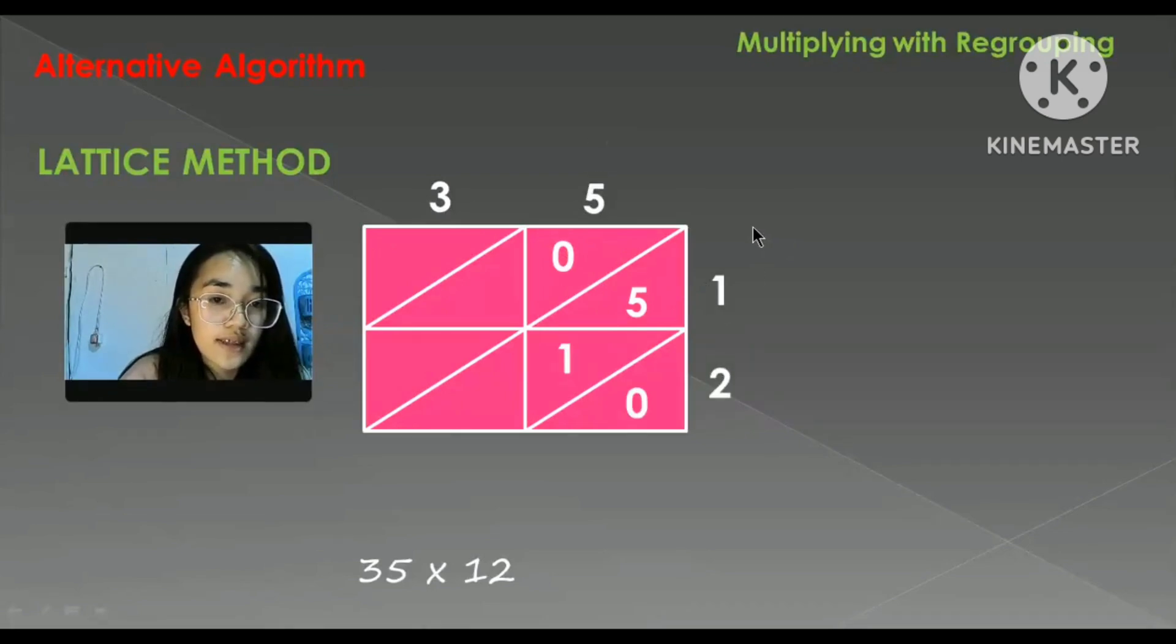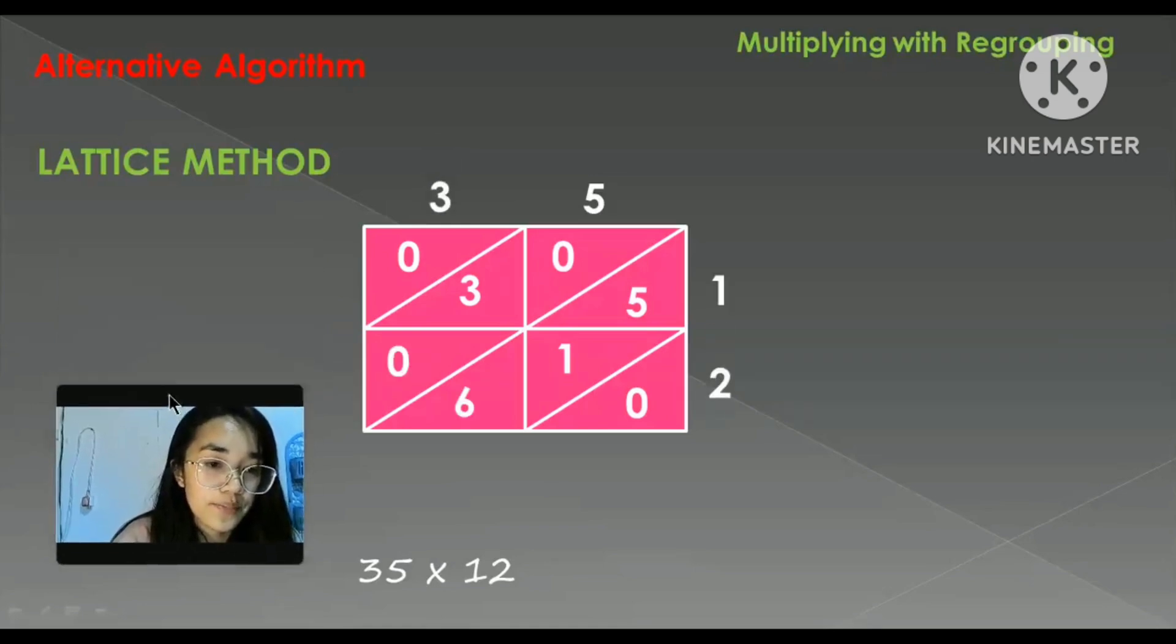Next, 5 times 2 is 10. Next one, 3 times 1 is equal to 3, and 3 times 2 is equal to 6.